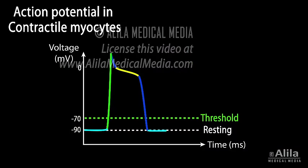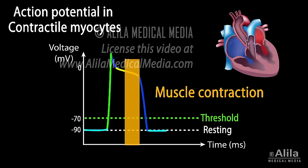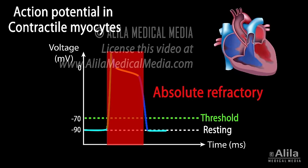Because of the plateau phase, cardiac muscle stays contracted longer than skeletal muscle. This is necessary for expulsion of blood from the heart chambers. The absolute refractory period is also much longer — 250 milliseconds compared to 1 millisecond in skeletal muscle. This long refractory period ensures the muscle has relaxed before it can respond to a new stimulus, and is essential in preventing summation and tetanus, which would stop the heart from beating.